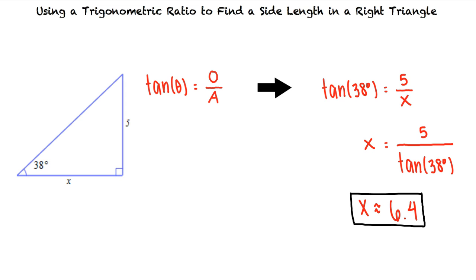So to find a missing side length in a right triangle, we need to use our given information to determine the trigonometric equation to use. From here, we can substitute in our known values and solve for x. Great work!